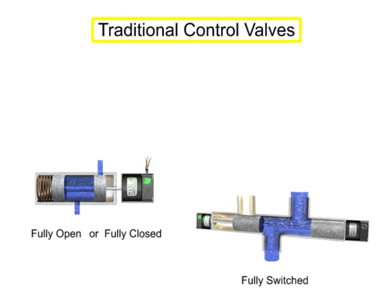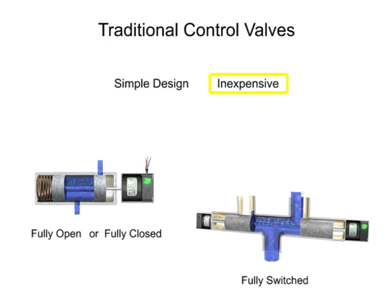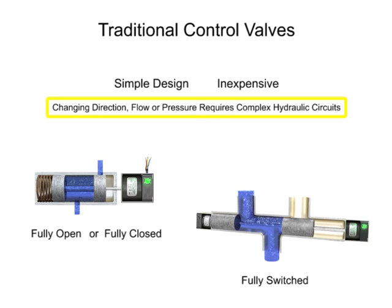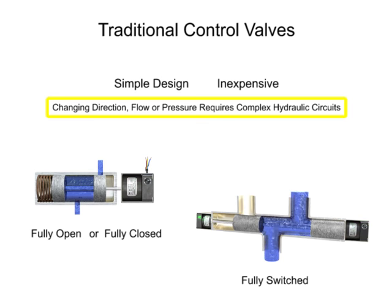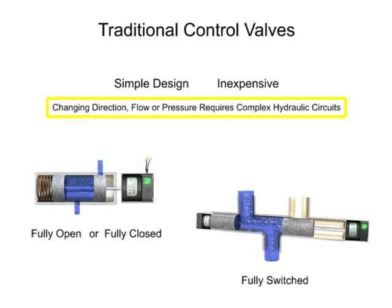Traditional control valves are of simple design and capability. Changing direction, flow, or pressure during machine operation would require a complex hydraulic circuit. Each desired direction, flow, or pressure would require an individual traditional valve to control it.